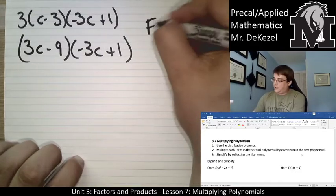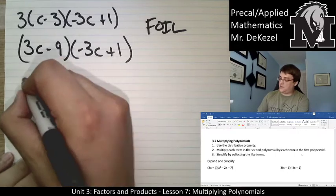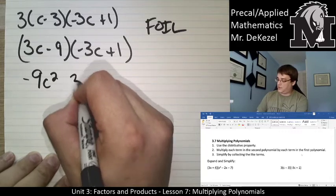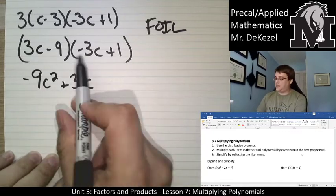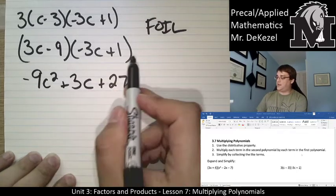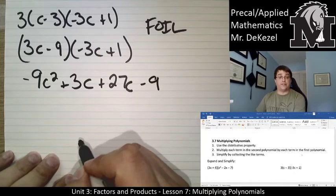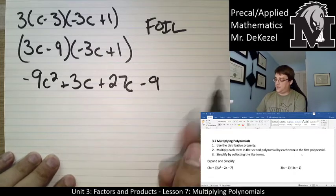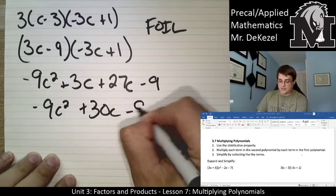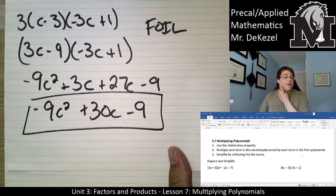I can now foil it like I usually would with any other binomial. So 3c times minus 3c is minus 9c squared. 3c plus 1 is 3c. Minus 9 times minus 3 is positive 27c. And then minus 9 and plus 1 multiplied together is minus 9. So we're going to combine our like terms in the middle, plus 3 and plus 27. We get minus 9c squared plus 30c minus 9. That is your expanded and simplified answer.